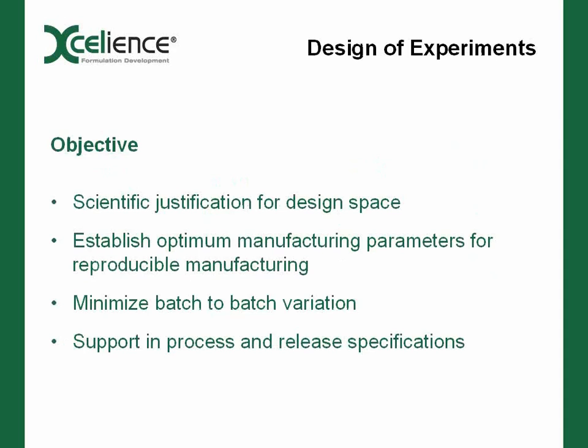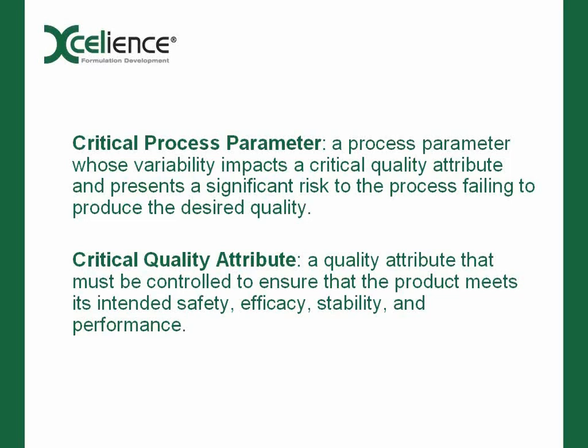Looking at the scale-up design of experiments objectives: we want to determine the design space and provide optimum manufacturing parameters that deliver something very reproducible. We want to minimize batch-to-batch variation and scientifically support in-process and release specifications. Two key terms to define here: a critical process parameter (CPP) is one where variability could impact a critical quality attribute of our product. A critical quality attribute (CQA) is something that must be controlled to ensure the product meets its intended safety, efficacy, stability, and performance requirements.